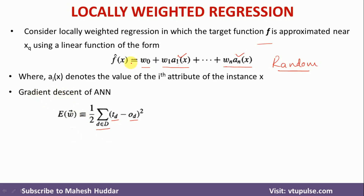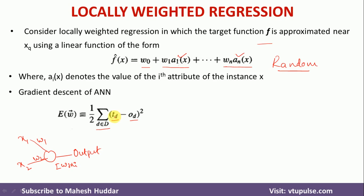Here, td is the target output — it is known and fixed — and od is the calculated output, which will change. For example, consider one neuron in an artificial neural network: x1 and x2 are inputs, w1 and w2 are their respective weights. The output od is calculated as the summation of wi·xi. Based on the actual output td and calculated output od, we compute this error term.